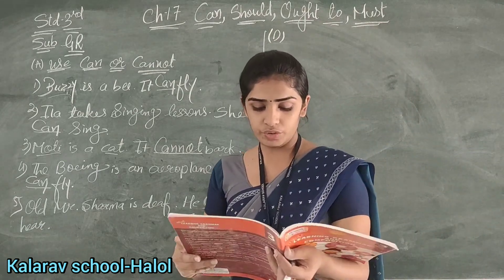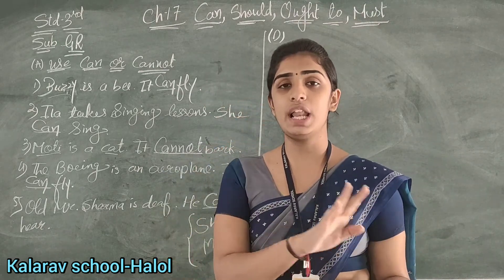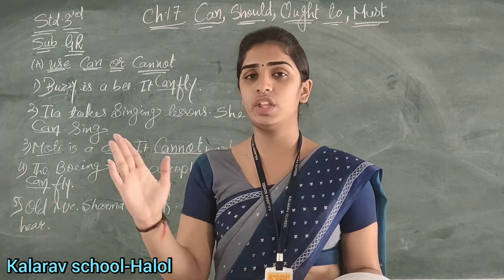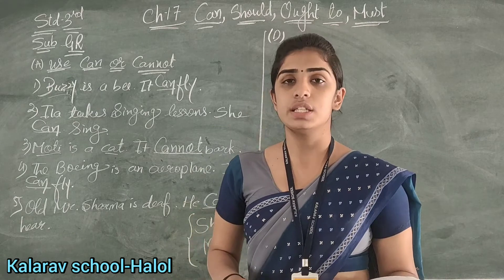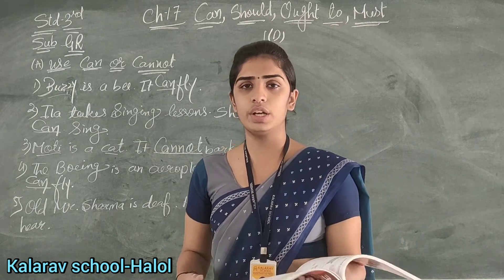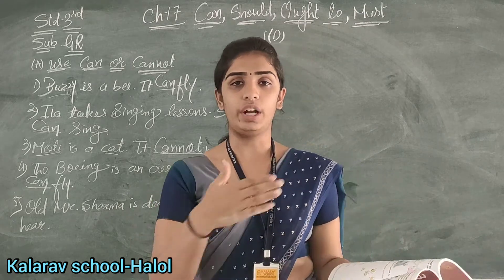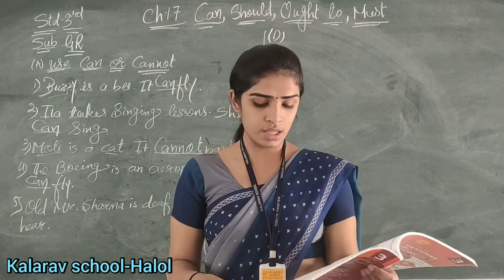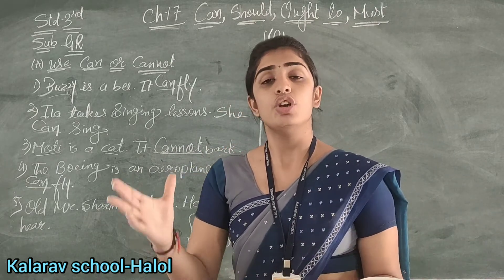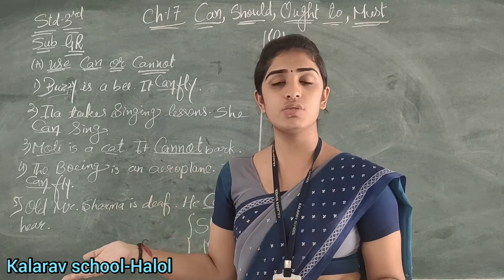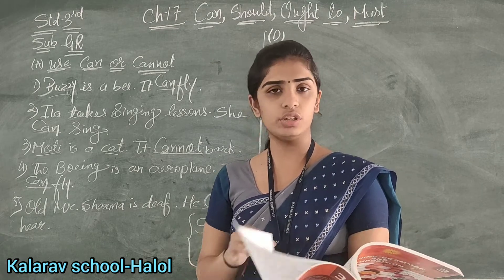First sentence: We should look left and right before crossing the road. We must look both left and right when we cross the road. Second: We should follow the traffic rules. Third: We should drive the vehicle on the right side. Fourth: People must use the zebra crossing. And fifth: Children should not play on the road.